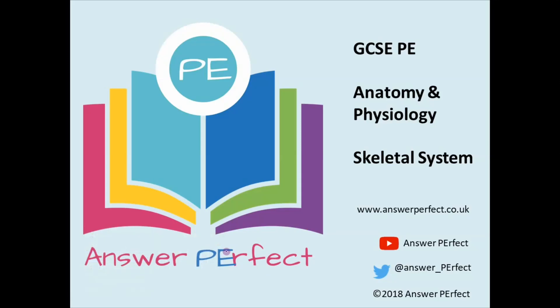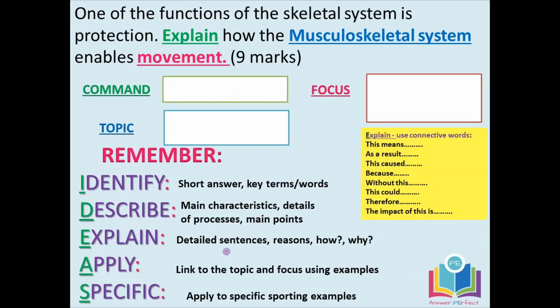This is the GCSE PE Anatomy and Physiology slideshow for the skeletal system. Here's the question: one of the functions of the skeletal system is protection. Explain how the musculoskeletal system enables movement. We're going to go through what the command word is, the topic and the focus, and break it down to show you how to structure that perfect answer. We'll go through the IDEAS framework to build up the answers and make sure you detail your knowledge accordingly.